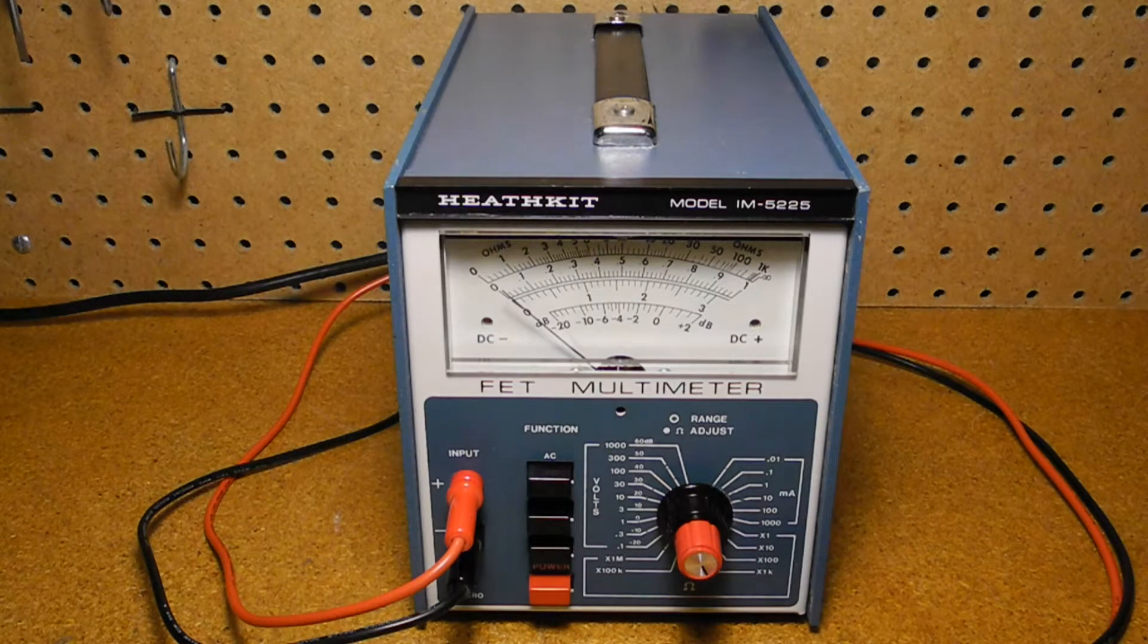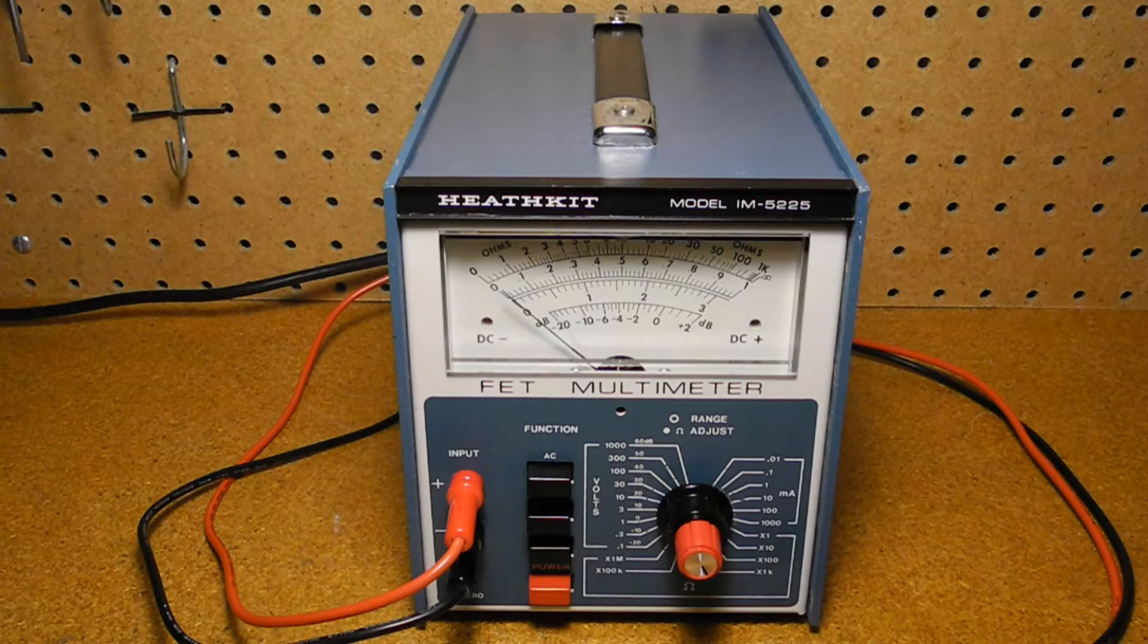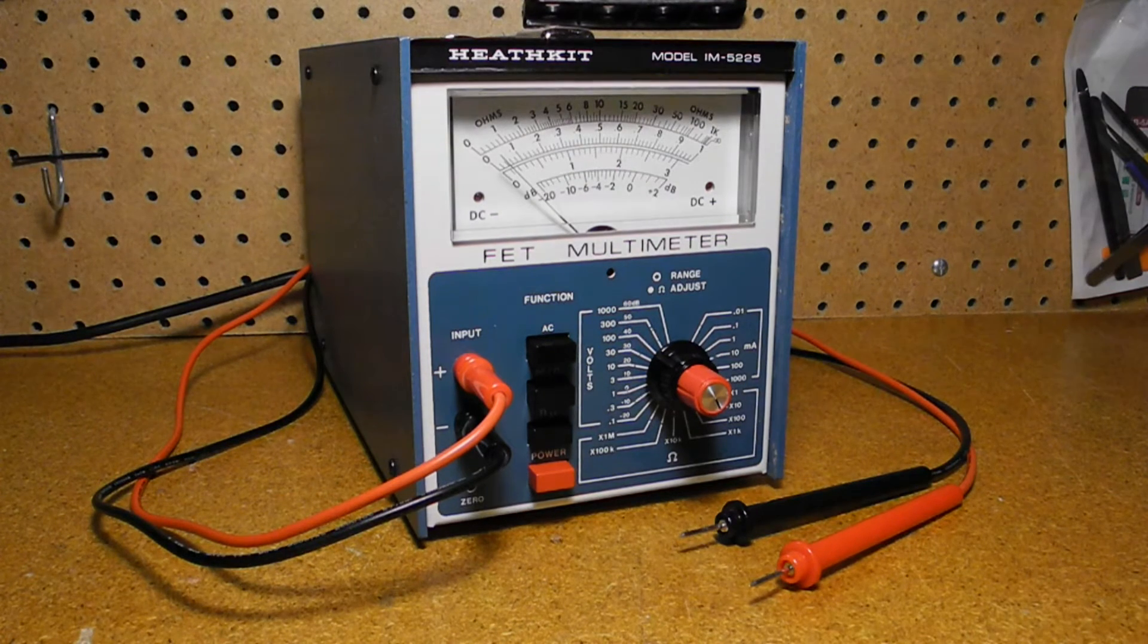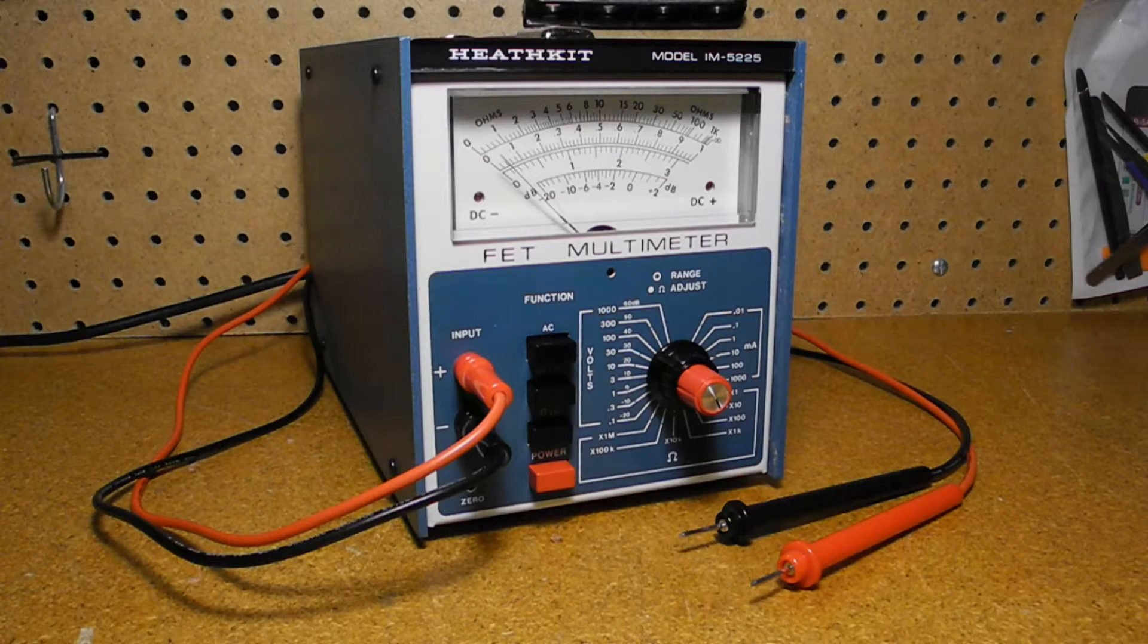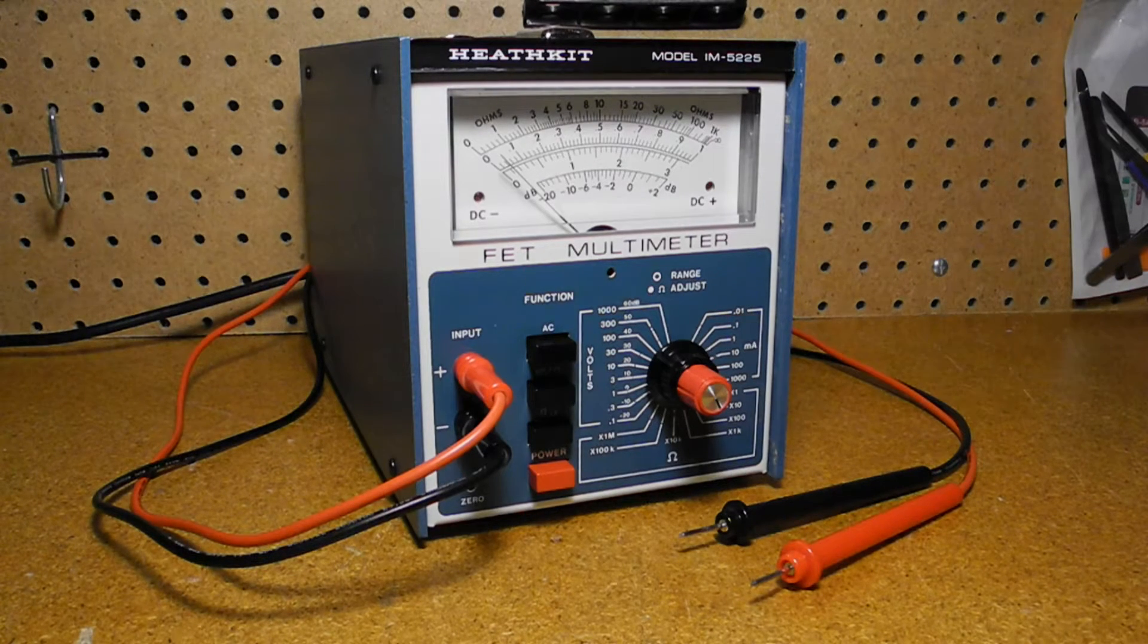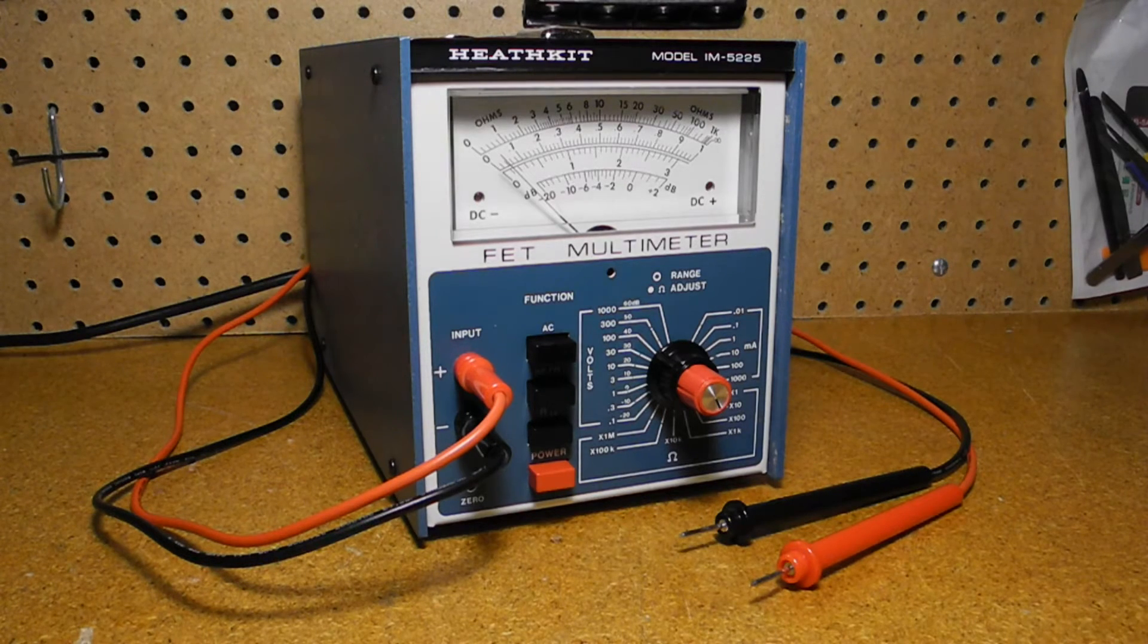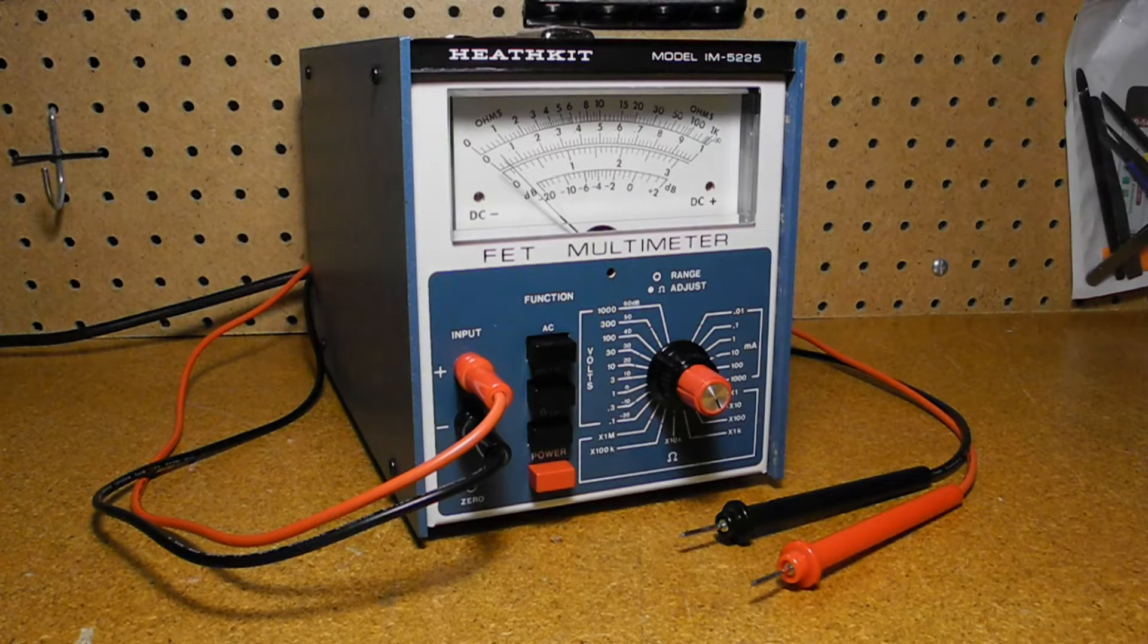It's solid-state, requiring no warm-up time. The case is quite deep, but takes minimal width and height on the workbench. The input leads are floating with respect to ground, and the meter responds to DC voltages and current of either polarity without swapping the leads around. The polarity is indicated by two red LEDs on either side of the meter. Its high input impedance, 10 megaohms, is similar to that of VTVMs and minimizes loading of the circuit under test.